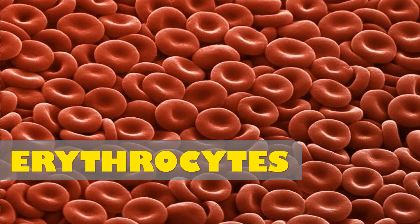This video is on the red blood cells or RBCs. The other name for RBCs is erythrocytes — erythros means red colored and cytes means cells. Blood is a semi-fluid material with a watery part called plasma and a solid part called formed elements or blood cells. The first type of formed elements is RBCs.